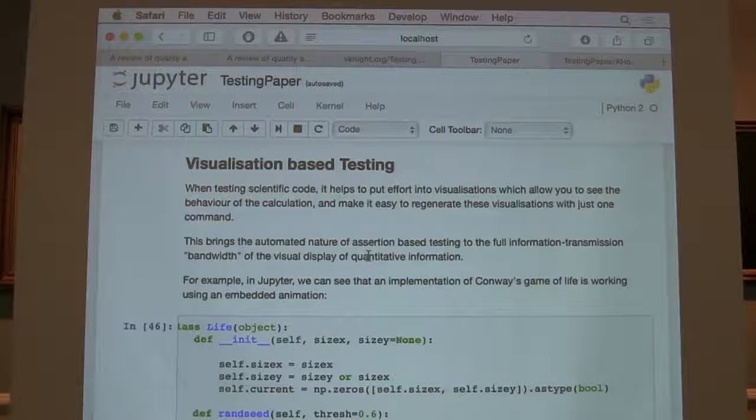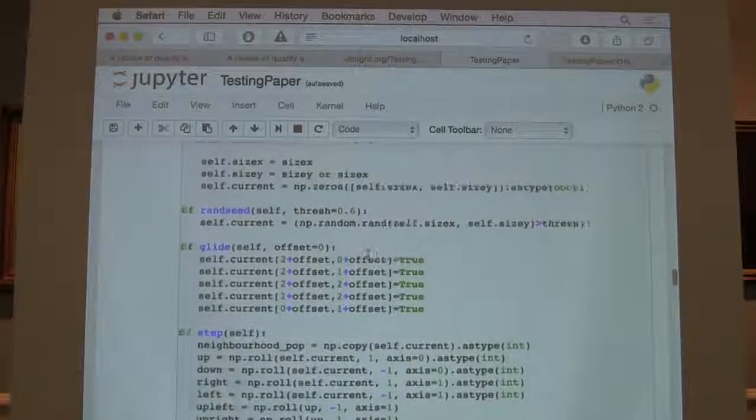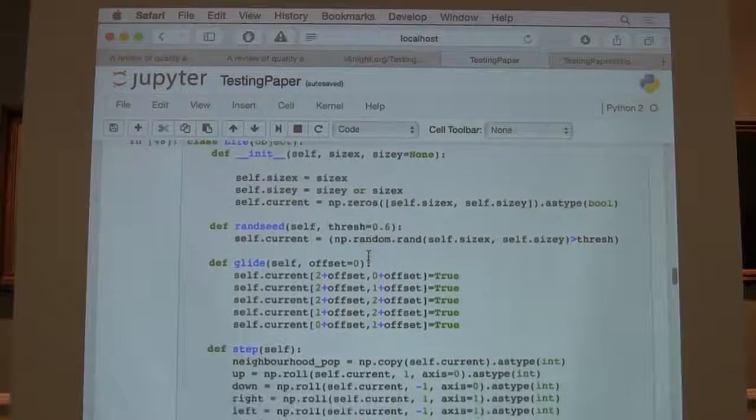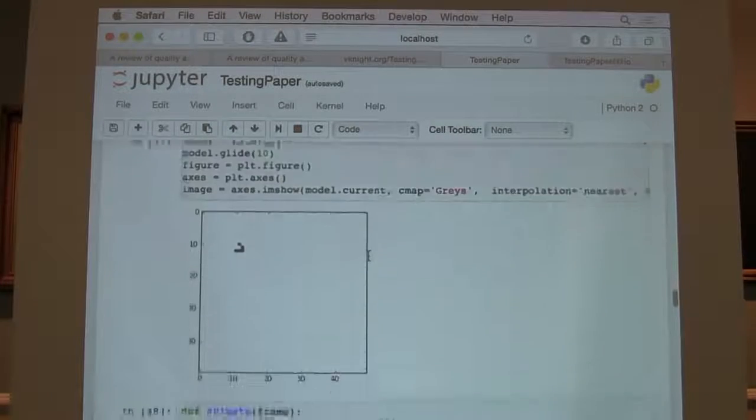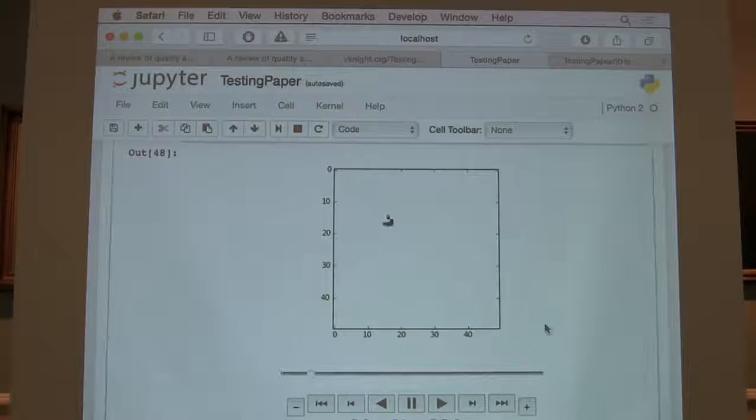One example here is I've made an extended example for this, using NumPy to do Conway's Game of Life. The way we tell that code is correct is through the animation of the Conway's Game of Life happening. By doing that, you can see if anything goes wrong - we can see if our periodic boundary conditions are correct.